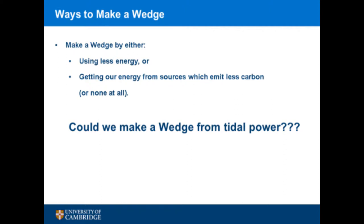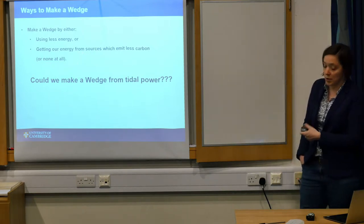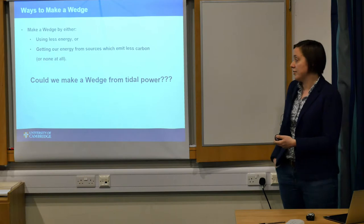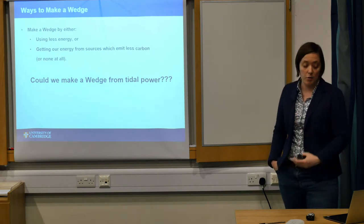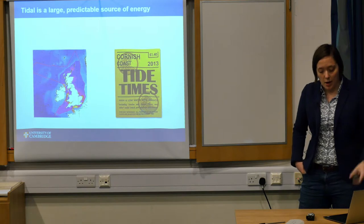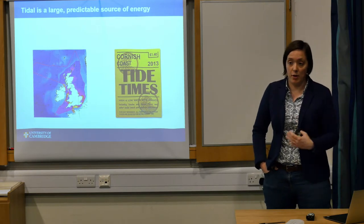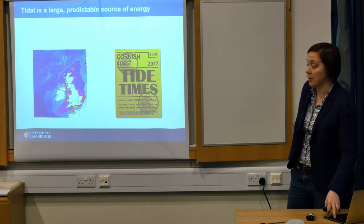If you did any maths at school, you can make a wedge by either using less energy or making less carbon to get that energy. Before I talk about the actual technical stuff, I'm going to show you what we need to do to make one of those wedges from tidal power. Tidal power in the UK is quite attractive because we have a lot of it — a lot of coast, a big tidal range, and it's very predictable. You can tell the grid in advance when you're going to make power, which sets it apart from wind and solar.